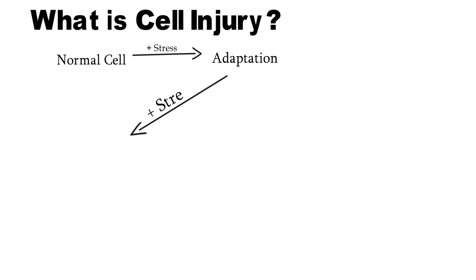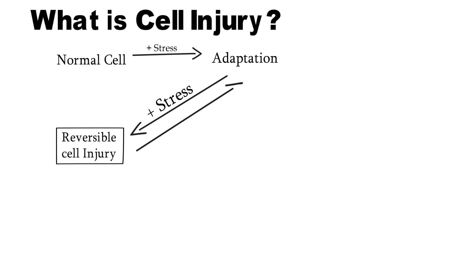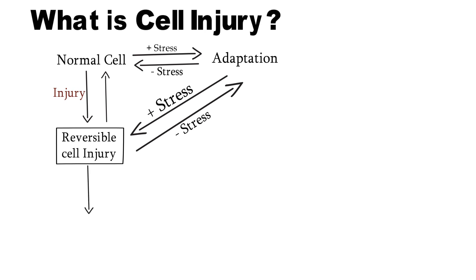If stress persists, then injury happens in the cell — that is reversible cell injury. If we remove the stress-causing agent, then the cell comes into the adaptation phase. Afterward, if the cell gets a physiological environment, then the cell becomes normal. Now a normal cell may also get injury and go directly into reversible cell injury. After some time, it may repair itself and become normal. In reversible cell injury, if the injury-causing agent persists, then the cell gets severe injury, which is known as irreversible cell injury.